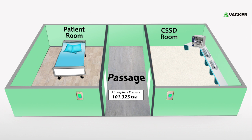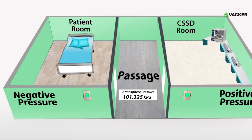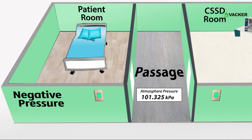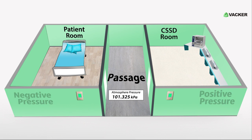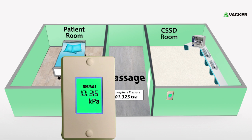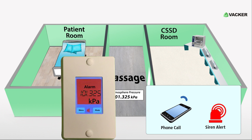In this example, the patient room is at negative pressure and the CSSD room is at positive pressure. When the pressure difference is maintained, the monitoring system will show a green indication. If the pressure difference exceeds the programmed values, the red indication will be activated. It can also generate a phone call alert and a local siren.